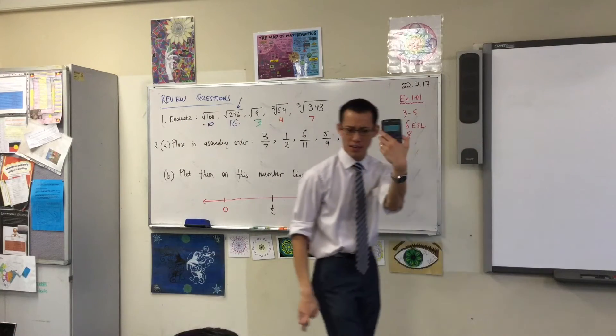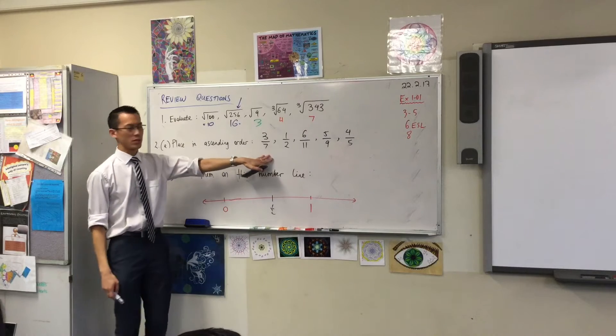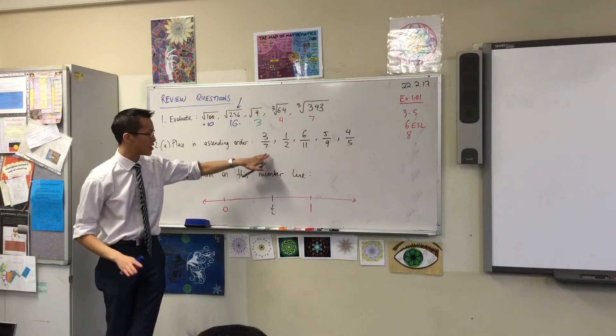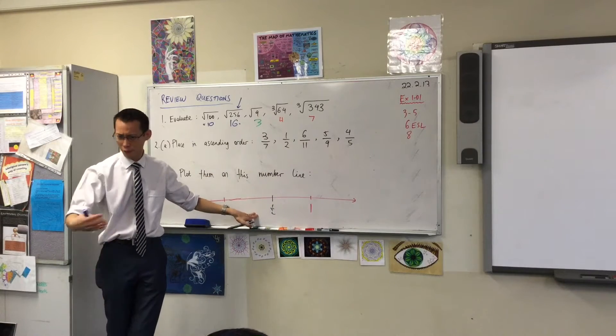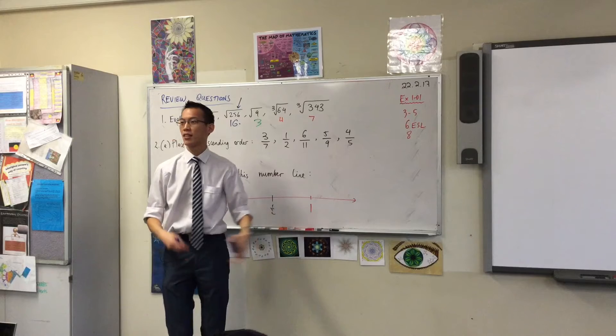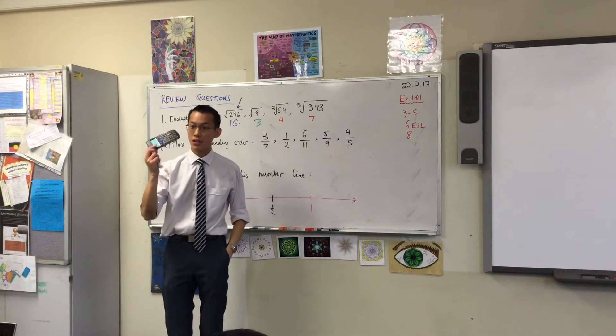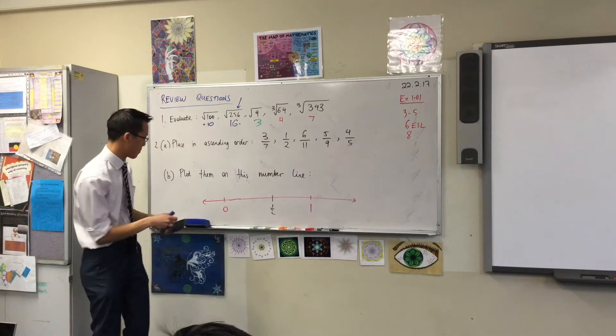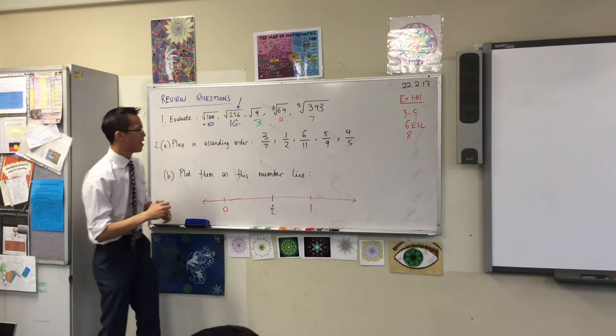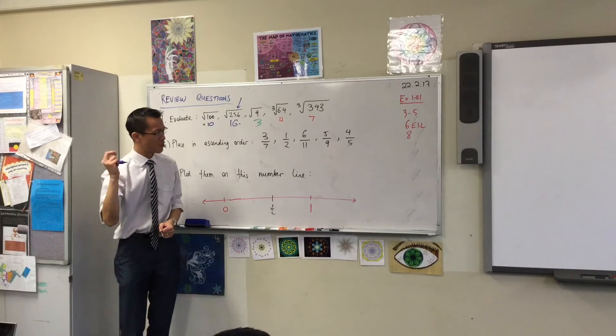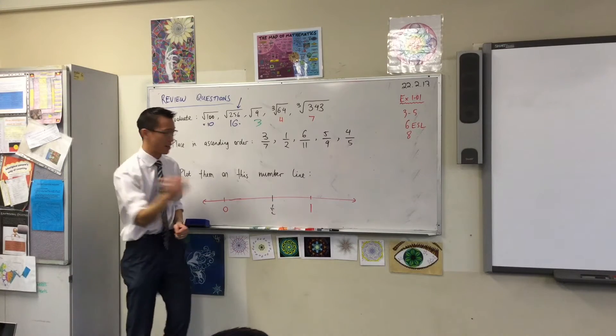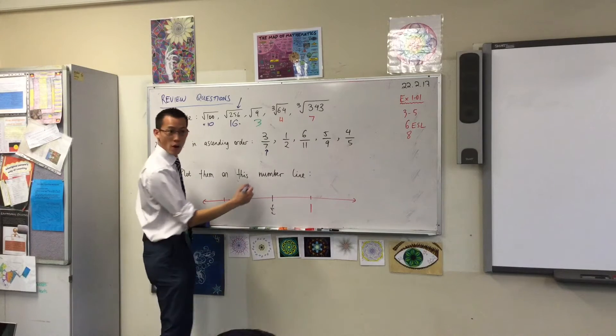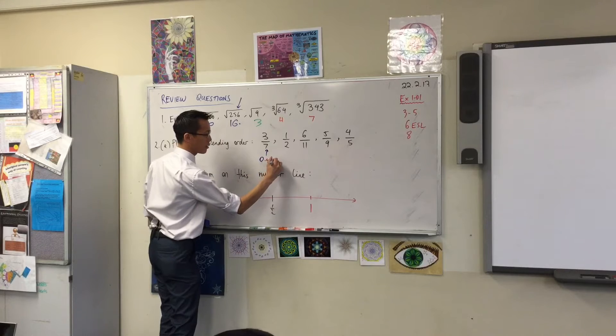Now actually while we're looking at your calculators, can you keep it there? Because this is going to be very useful for us when we do this. One of the quickest ways to be able to do this part thoughtfully and efficiently is to take all of these guys and convert them into decimals. Let's go three decimal places. Can someone tell me what three sevenths is? 0.429.